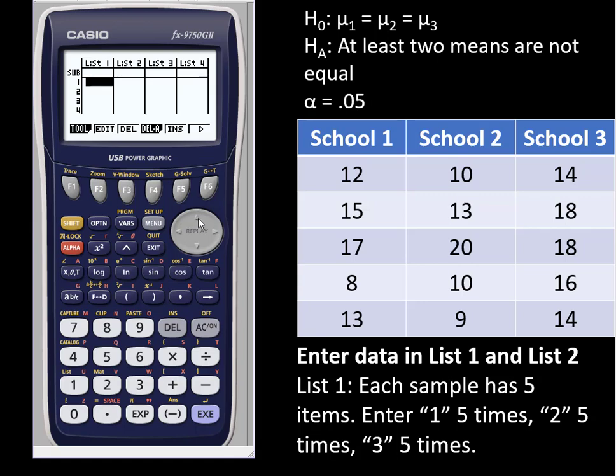Now in a Casio for ANOVA we only enter data in list 1 and list 2. List 1 will be the number of items in each sample. For example, school 1 has five items in the sample, school 2 has 5, and so does school 3.